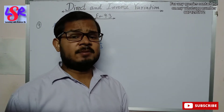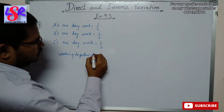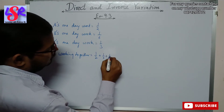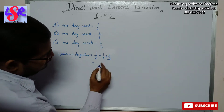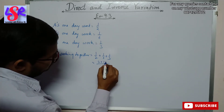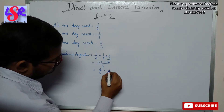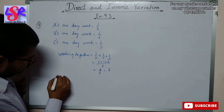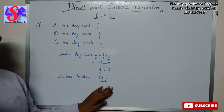We have to find the time taken by them if they all work together. So working together it is going to be 1 upon 2 plus 1 upon 6 plus 1 upon 3. Taking LCM of 6, this gives us 3 plus 1 plus 2 upon 6, that is 6 upon 6, meaning the whole work is completed in a single day. So the time taken by them will be one day.